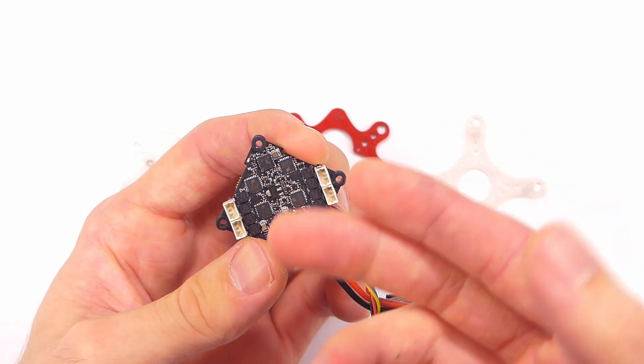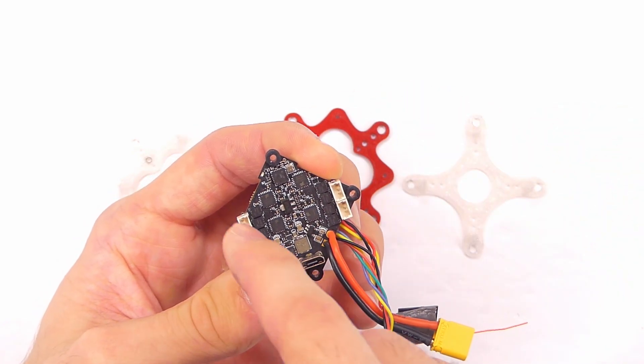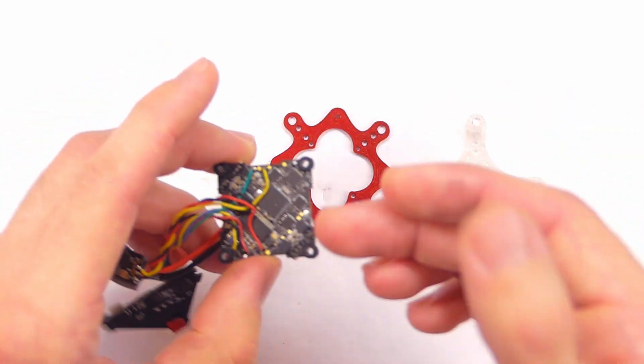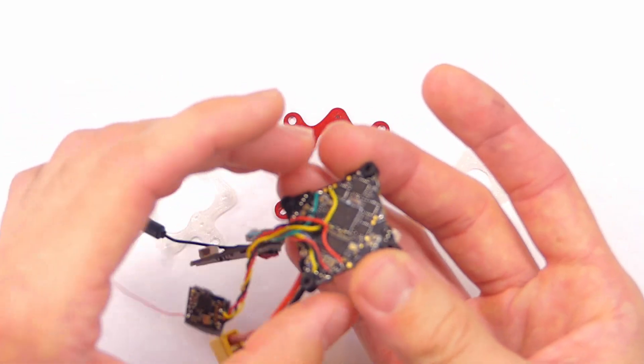Well, an all-in-one flight controller, and they're becoming ever more popular with the rise of micro drones, has everything that you need in one board. So it has four ESCs, typically just four ESCs and the flight controller, but it can also have like a receiver and video transmitter built in sometimes.